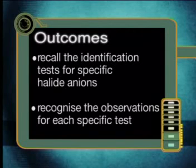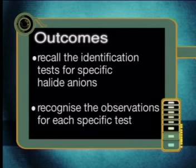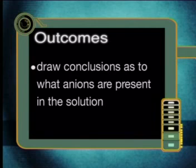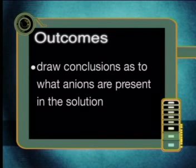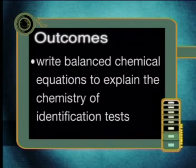Before we do that, let's look at the outcomes for this lesson. By the end of this lesson, you should be able to recall the identification tests for specific halide anions, recognize the observation for each specific test, draw conclusions as to what anions are present in the solution, and write balanced chemical equations to explain the chemistry of identification tests.